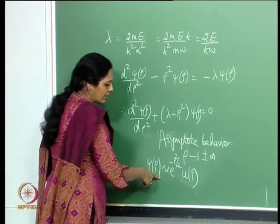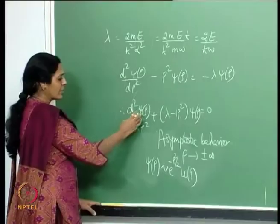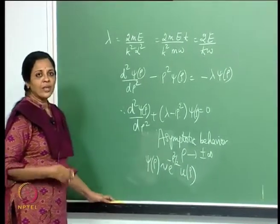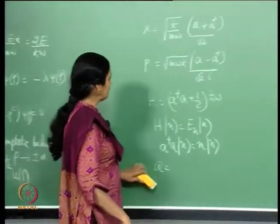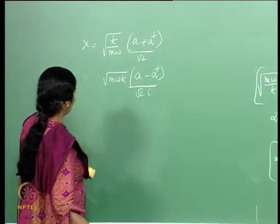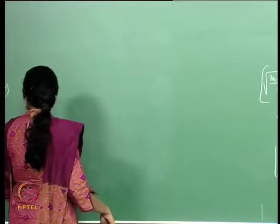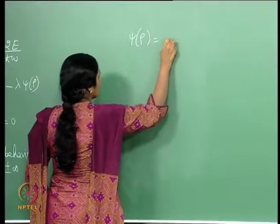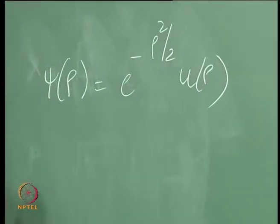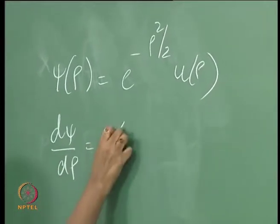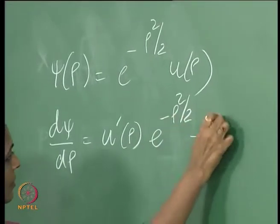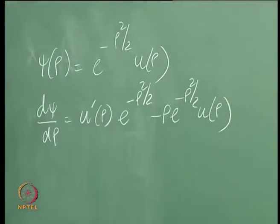We substitute ψ(ρ) = e^(-ρ²/2) u(ρ) into the differential equation to recast it as an equation for u(ρ). Once we solve for u, we multiply by the Gaussian e^(-ρ²/2) to get the full wave function of the simple harmonic oscillator in the position representation.